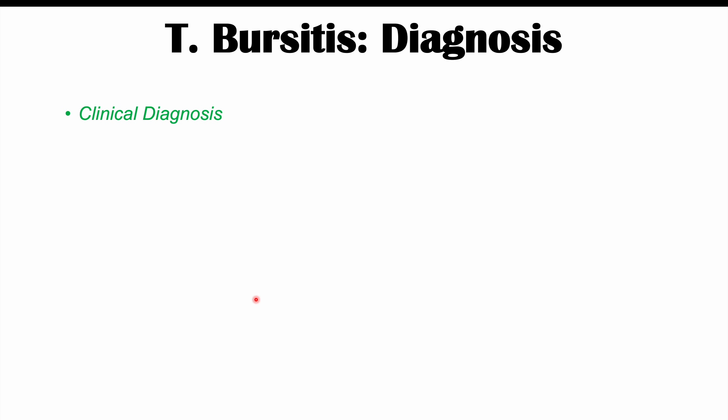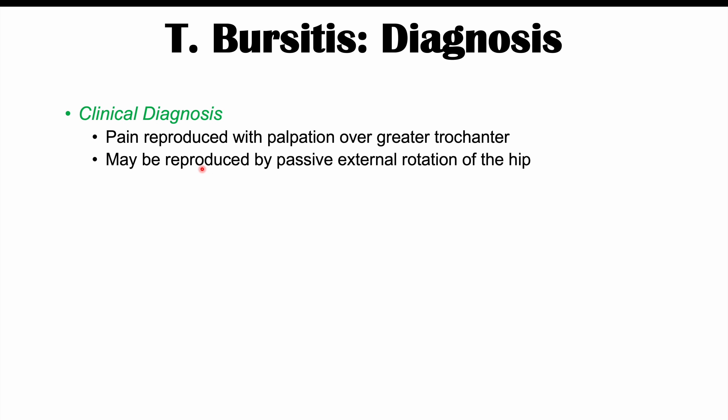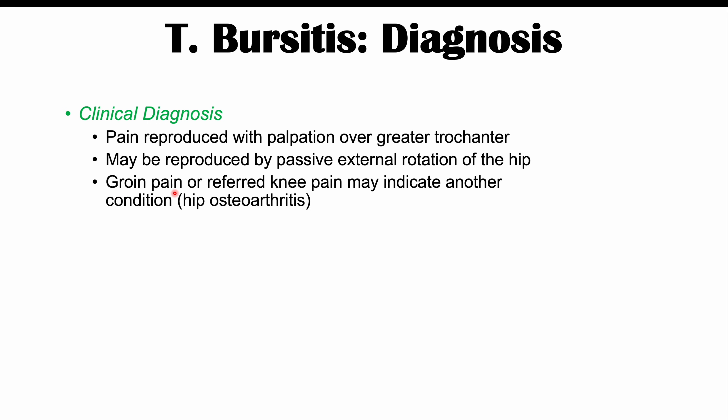This is a clinical diagnosis, made by reproducing that hallmark lateral hip pain. When the clinician palpates or puts pressure over the greater trochanter, that pain can be reproduced — a hallmark finding for clinical diagnosis. Pain can also be reproduced by passive external rotation of the hip. If there is any groin pain or referred knee pain, this may indicate another condition. The pain should be only on the lateral hip over the greater trochanter, possibly spreading down the lateral thigh, but not past the knee.